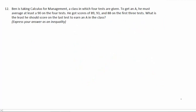Number 12. Ben is taking Calculus for Management, a class in which four tests are given. To get an A, he must average at least a 90 on the four tests. He got scores of 89, 93, and 88 on the first three tests. So what is the least he should score on the last test to earn an A in the class?